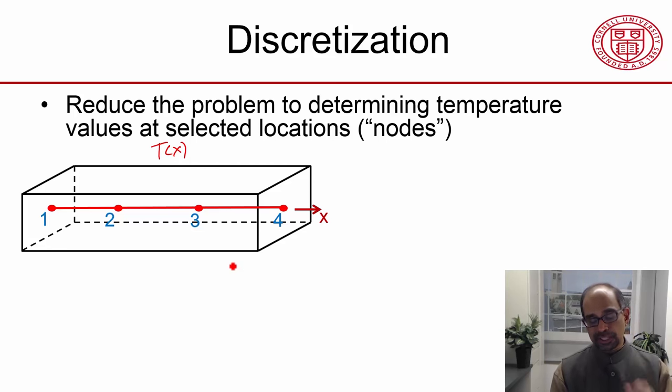And I say, instead of determining temperature everywhere along that line, I'm going to determine only at selected locations. And in particular, I'll determine it at four locations, one, two, three, four.